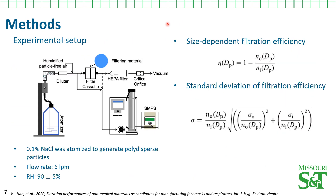To determine the filtration efficiency of the filter media, we measured the particle size distribution upstream and downstream of the filter. Here it shows the diagram of the experimental setup, including aerosol generation and filtration assessment by SMPS. We used sodium chloride as the test aerosols. The size-dependent filtration efficiency and standard deviation of the efficiency were calculated. During this experiment, the relative humidity was maintained at 90%, which simulates the lung environment.